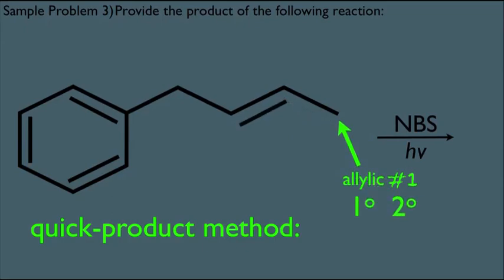And you would do the same exact thing for the second allylic position. That is, again, locate him. This would be the second one here. Again, turn him into a radical and ask yourself, what kind of radical would that be? Notice he's not only secondary, but he's also benzylic. So we take note of that.